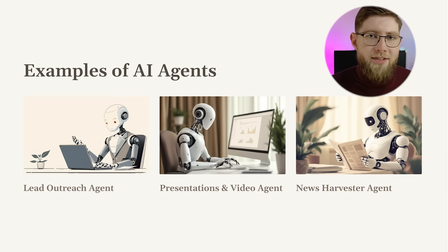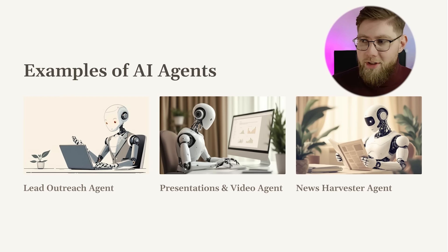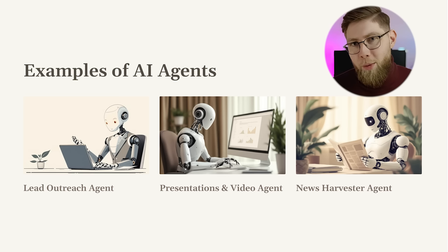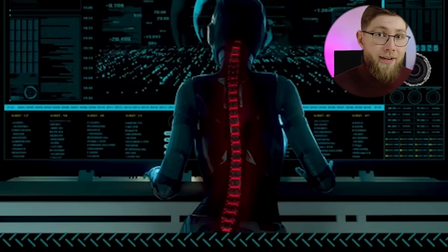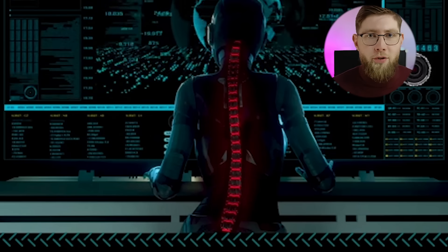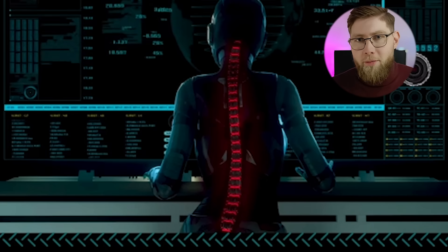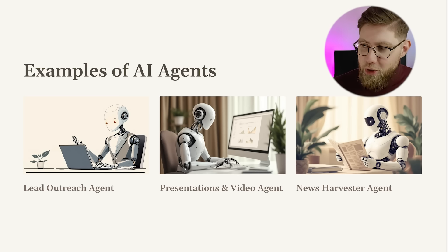Fifth, presentation and video agent — this full presentation was generated by an AI agent-enabled tool called Gamma. The input was just a description of the topic and an outline of all the topics to discuss, and based on that text description, the full presentation was generated with all the images, text, and diagrams. Such a presentation could take hours to design manually. And lastly, news harvester agent — you can have an agent monitoring specific podcasts or YouTube channels and automatically summarizing new videos as they come up. Make sure you add the Augmented U channel to your list!